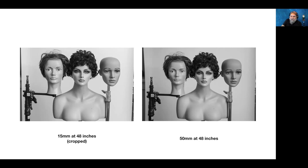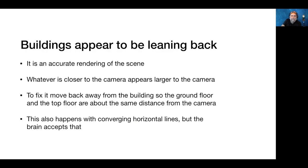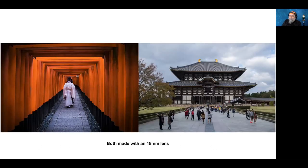The classic problem of buildings appearing to fall backwards: objects closer to the camera — like cathedral doors or rocket engines — appear bigger than objects further away, like the tops of spires or the tip of the rocket. This is actually normal perspective; that's how it looks to us, but our brain compensates. In a photo, the brain doesn't know what to do and it makes you think things are falling backwards. You're in too close if this is happening. To fix it, move back. The same road-narrowing-into-the-distance effect exists, but our brains accept that one.